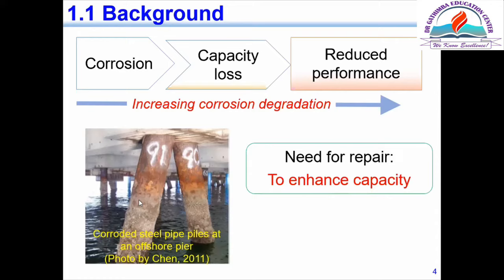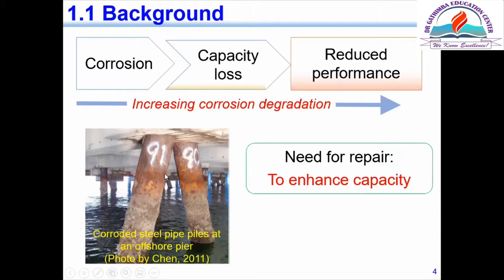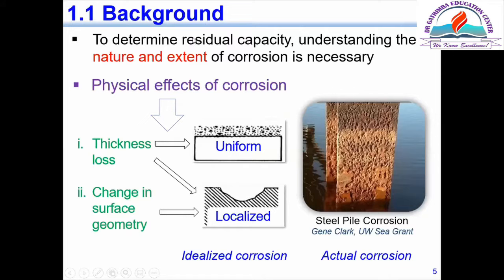In my introduction, this figure is from one paper — a photo from Chen 2011. My research was on corrosion of steel, so I put a photo of a steel pipe pile here. This is how I would present it: 'Corrosion leads to capacity loss, and as degradation increases there is a reduction in structural performance, as seen in this photo of steel pipe piles used in an offshore pier, taken from the work by Chen in 2011. Therefore, due to corrosion, there is a need for repair to enhance capacity.'